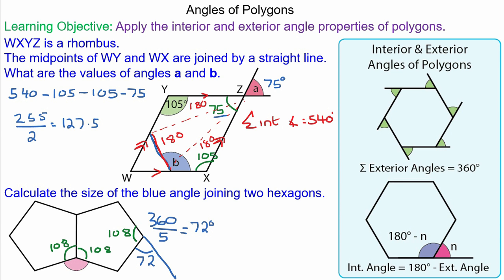So finally, we know the angles about a point add up to 360. So 360 minus the other two angles—360 minus 216—the pink angle will equal 144 degrees.